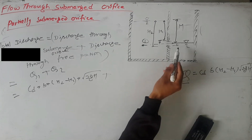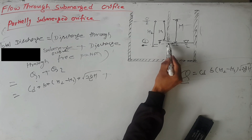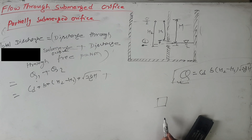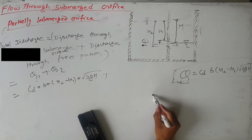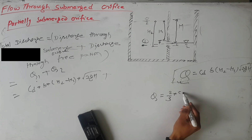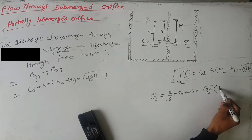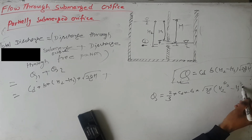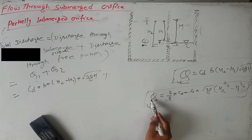For the free portion, we use the formula for discharge through a large rectangular orifice, derived in the previous video: Q = (2/3) × C_D × B × √(2g) × (h2^(3/2) − h1^(3/2)). This is the discharge through the large rectangular orifice. We substitute this value into the total discharge equation.